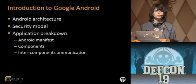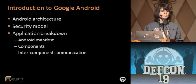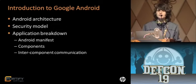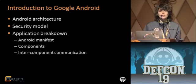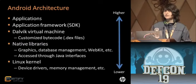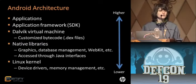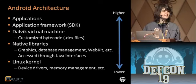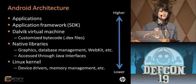In terms of introduction to Google Android, we're going to discuss architecture, security model, and application breakdown — the Android manifest, components of an Android application, and inter-component communication. Android is built on top of the Linux kernel, which provides things like device drivers and memory management. On top of the kernel we have native libraries in C and C++ that provide things like graphics, database management, and the WebKit browser engine.